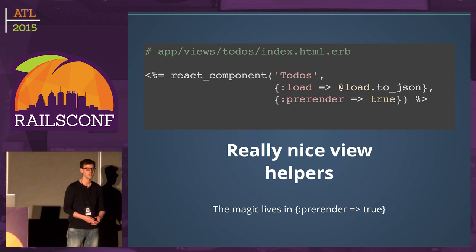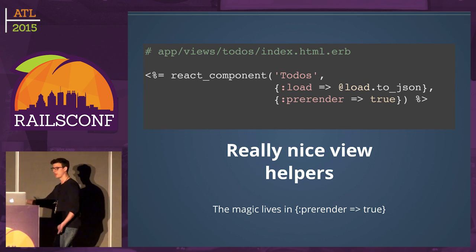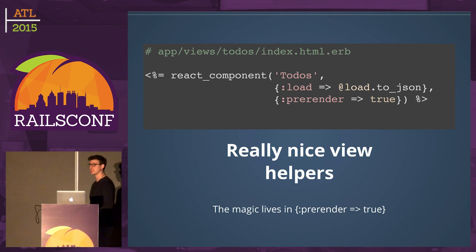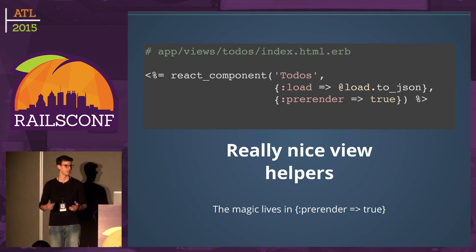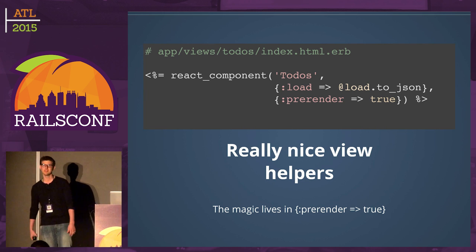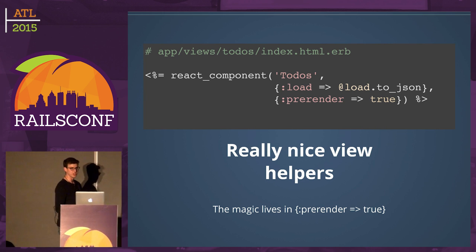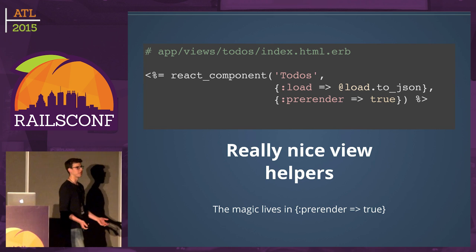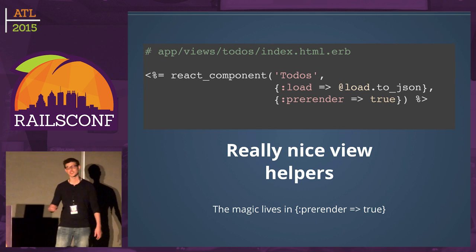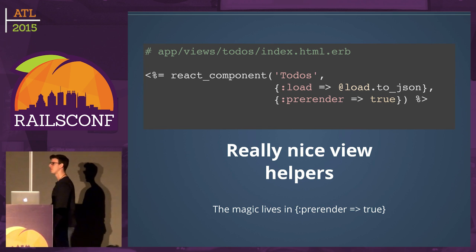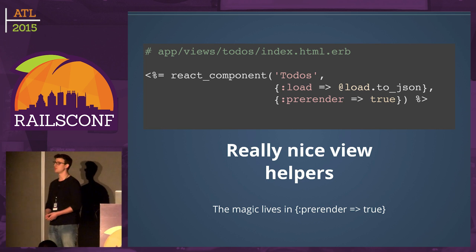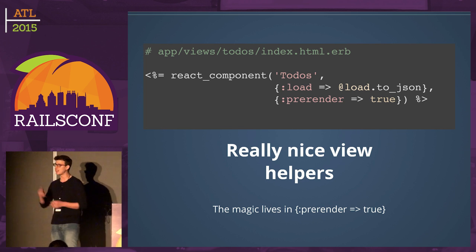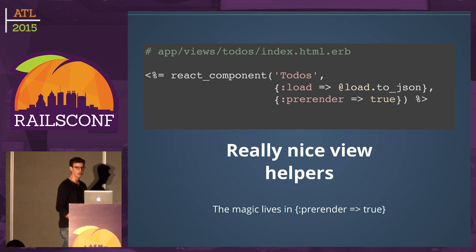The magic is in prerender: true. That's all you need to render on the server. When React serves it, it serves as HTML. The magic behind it is unobtrusive JavaScript — it mounts some data components, then React takes over. It works really nicely.